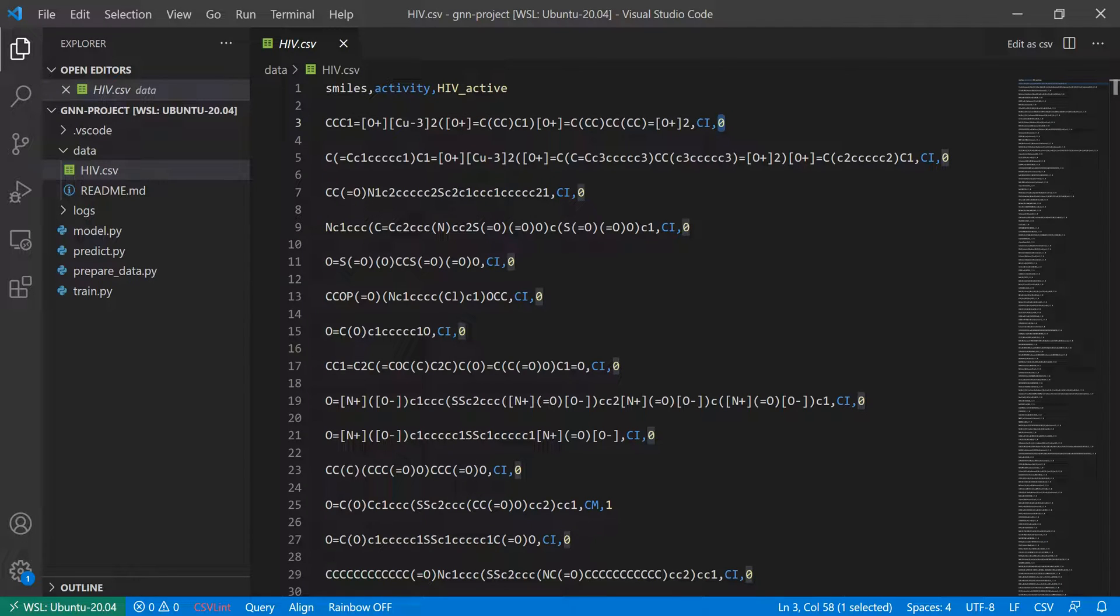So what this means is simply that we have a binary label that tells us if a specific molecule is able to inhibit the human immunodeficiency virus.